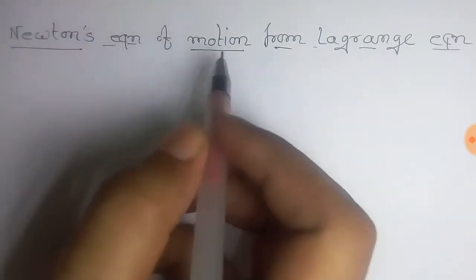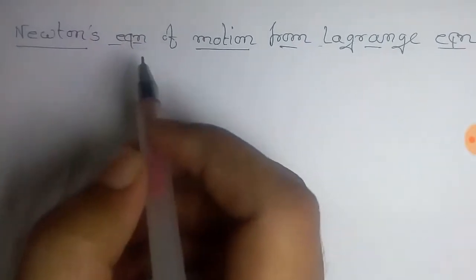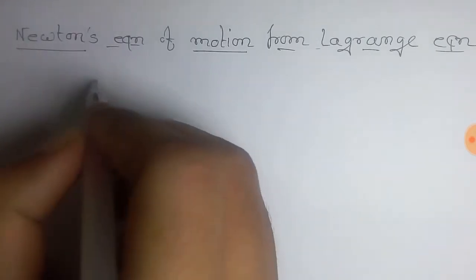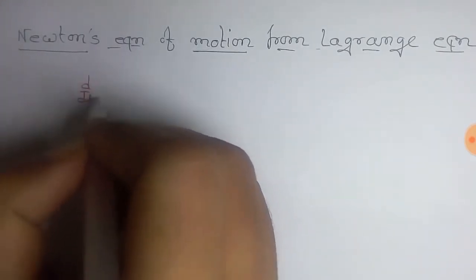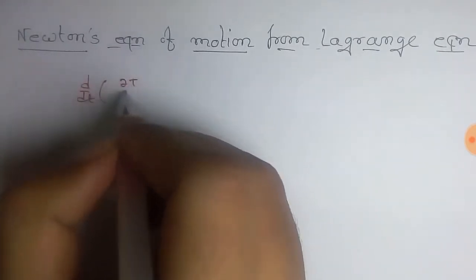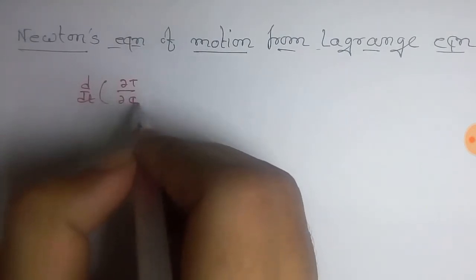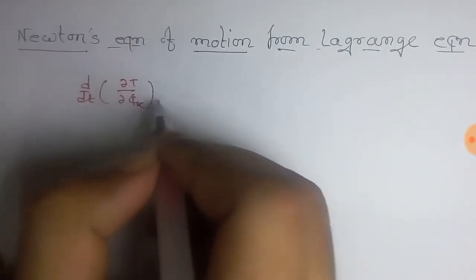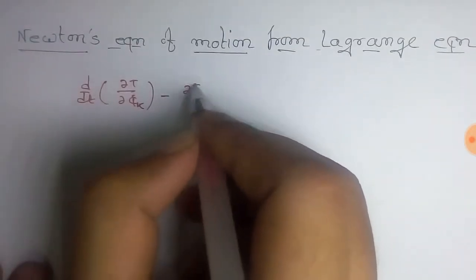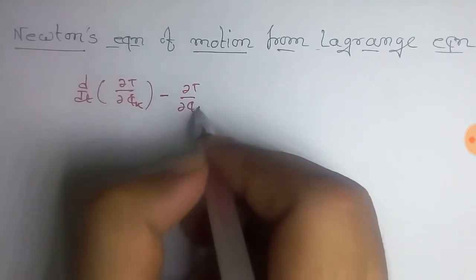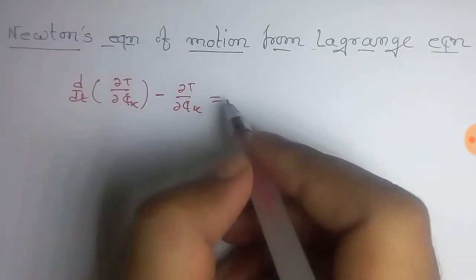In this video we'll prove Newton's equation of motion from Lagrange's equation. The general form of Lagrange's equation is d/dt of ∂T/∂q̇k minus ∂T/∂qk equals Gk.